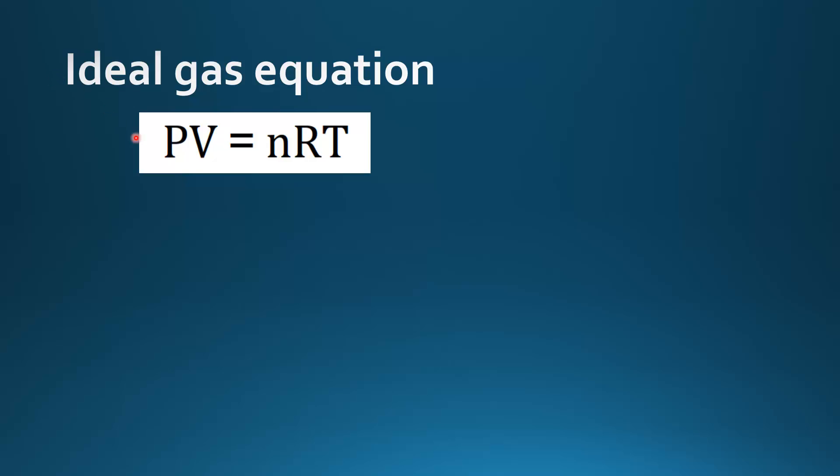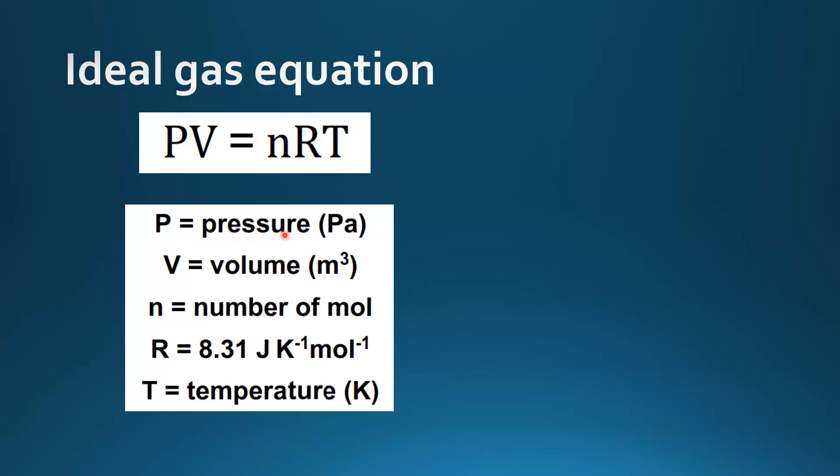Ideal gas equation. The ideal gas equation is PV equals nRT. P is pressure and that must be in pascals. V is volume in meters cubed.